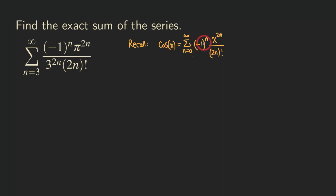Now if we compare this Maclaurin series with the series that we have here and see how similar they are: first, we have the same alternating factor, negative 1 to the n — negative 1 to the n right here. So they're the same. And then we also have that (2n) factorial in the denominator — we also have that.